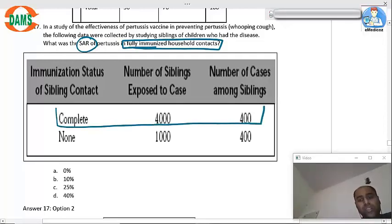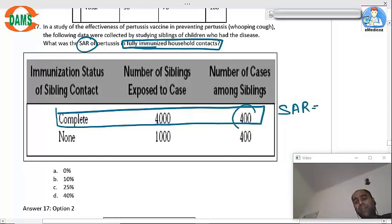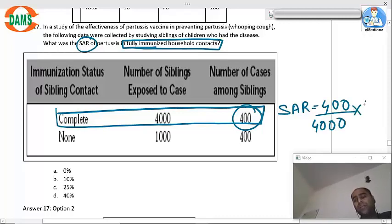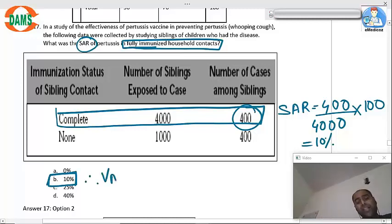So you are only going to consider this particular row. So secondary attack rate: number of secondary cases that were 400. So 400 by 4000 into 100, so answer will come as 10 percent. So 10 percent of the siblings who have been vaccinated will still have this, and therefore the vaccine efficacy...